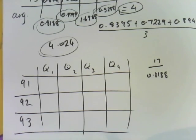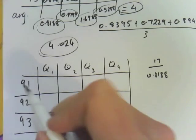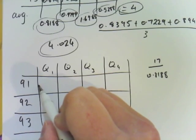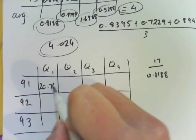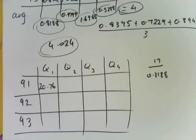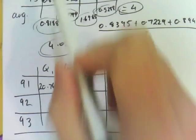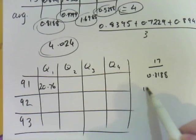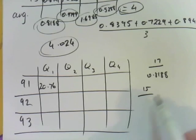So 17 divided by 0.8188 actually gives us a de-seasonalized point of 20.76. If I go through and did that for each of them, this one here was 15 for 92 Q1, so I'm going to divide that by 0.8188.